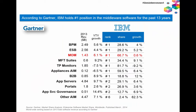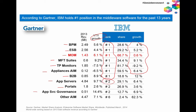Looking at Gartner market share numbers across different categories — Business Process Management, Enterprise Service Bus, Message Oriented Middleware, Managed File Transfer, Transaction Processing, Appliances, B2B, Application Servers, Portals, and Application Service Governance — in most of these, IBM is ranked number one. In many cases IBM's growth rate is faster than the industry growth rate. In Application Servers, IBM may not be number one, but that's partly due to different accounting strategies Oracle uses to report revenue — and IBM is growing faster than Oracle in that space.